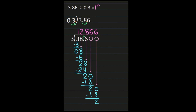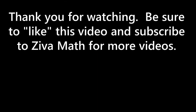There are a couple of ways to write the final answer. You can write it with a repeating decimal — 12 and 86 hundredths with a line above the 6 to show it repeats. Or you can round: rounding to the hundredths place, I look at the digit behind the hundredths place, which is 6, and round up to 12 and 87 hundredths. Thank you for watching — be sure to like this video and subscribe to Ziva Math for more videos.